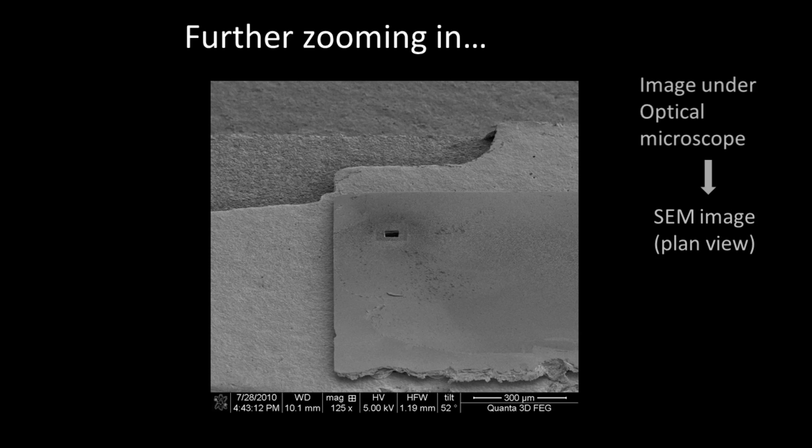But what we really are interested in is what's going on under that surface. So using an ion beam we can essentially dig a little hole in the surface of the LED and use that to peer in under the surface. And this is what we see.